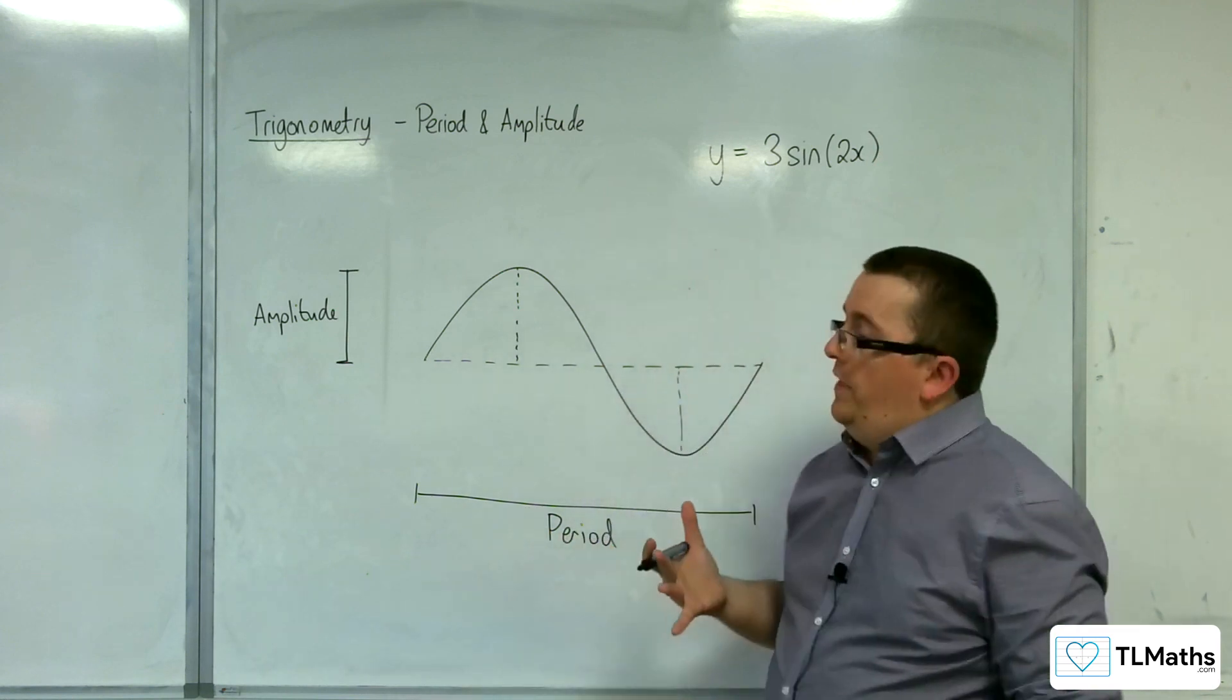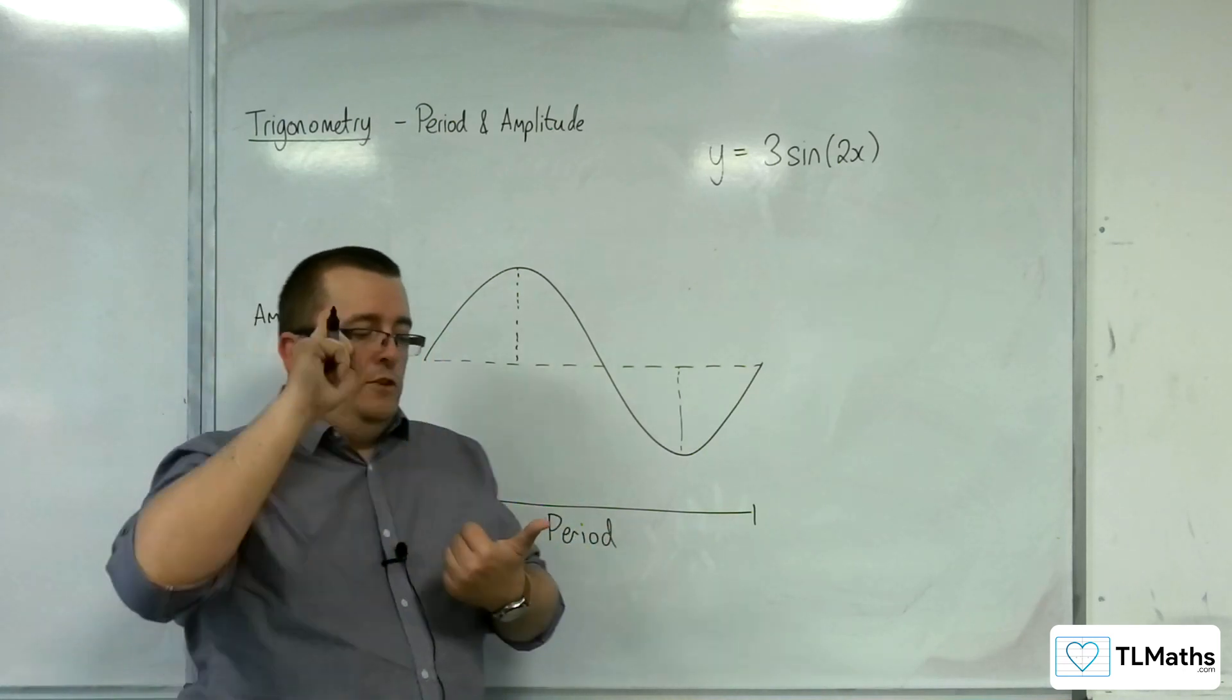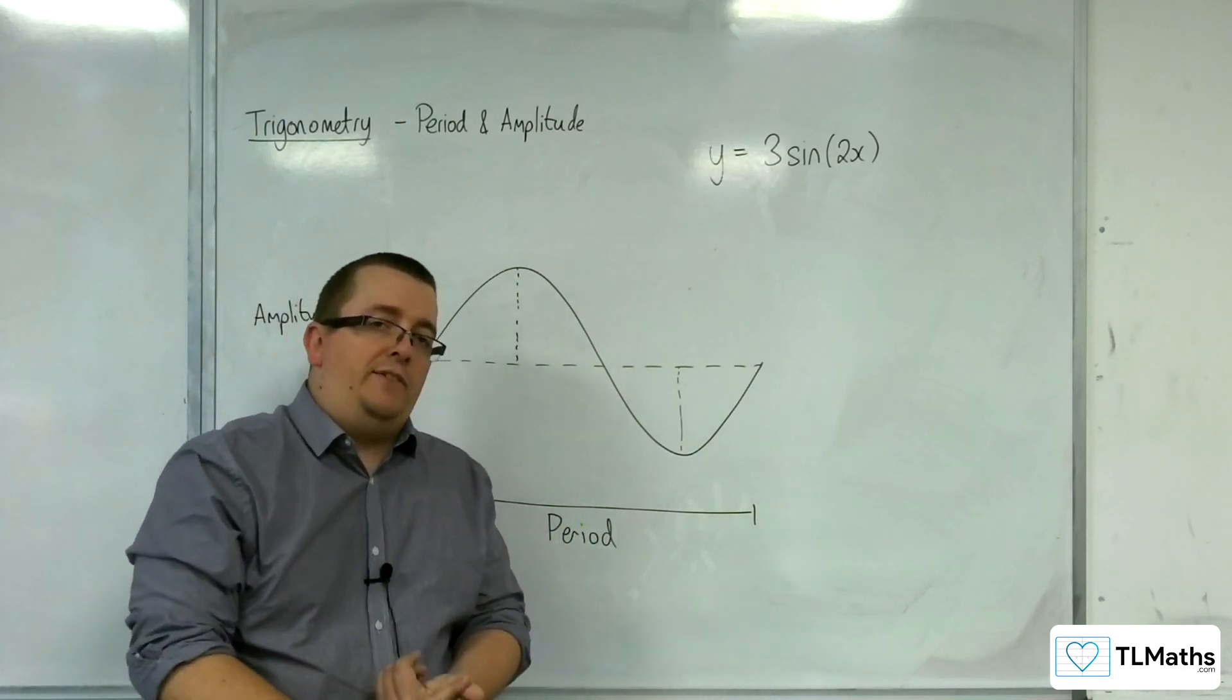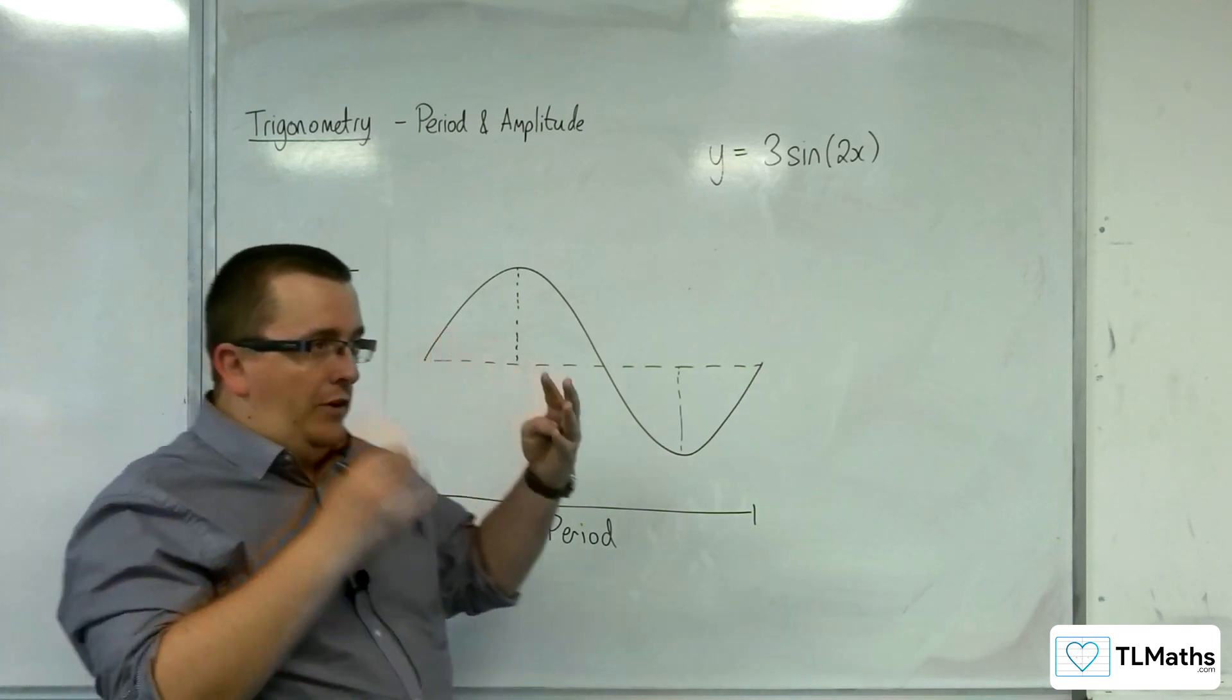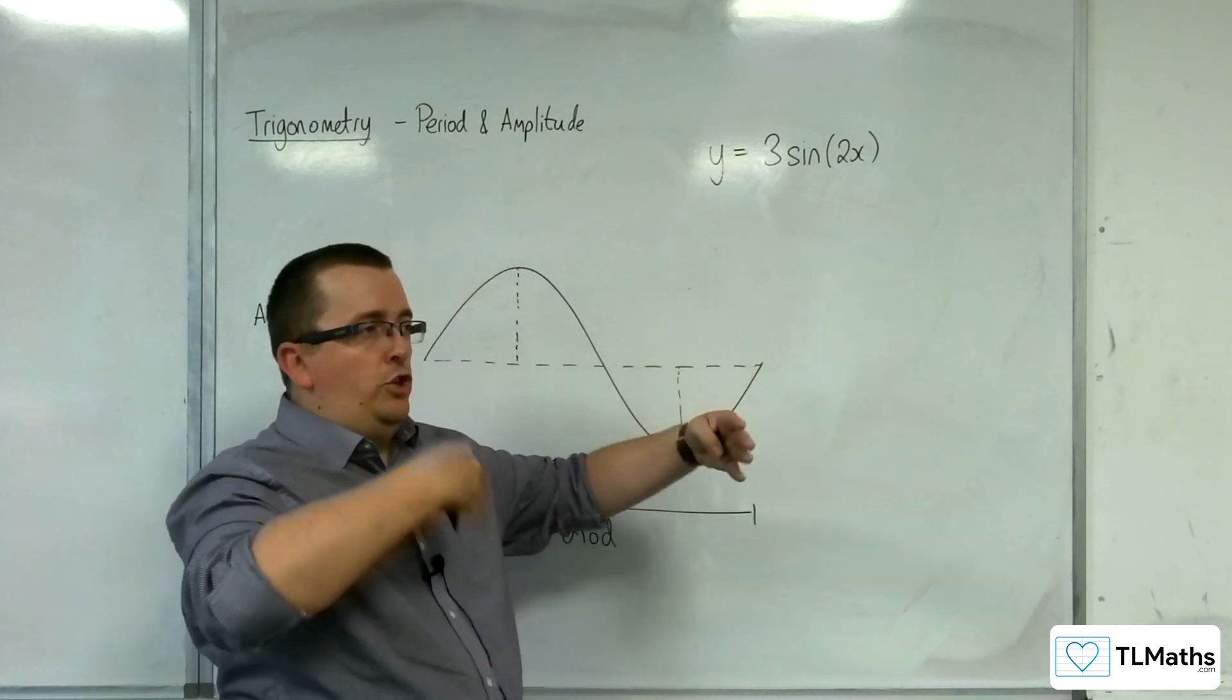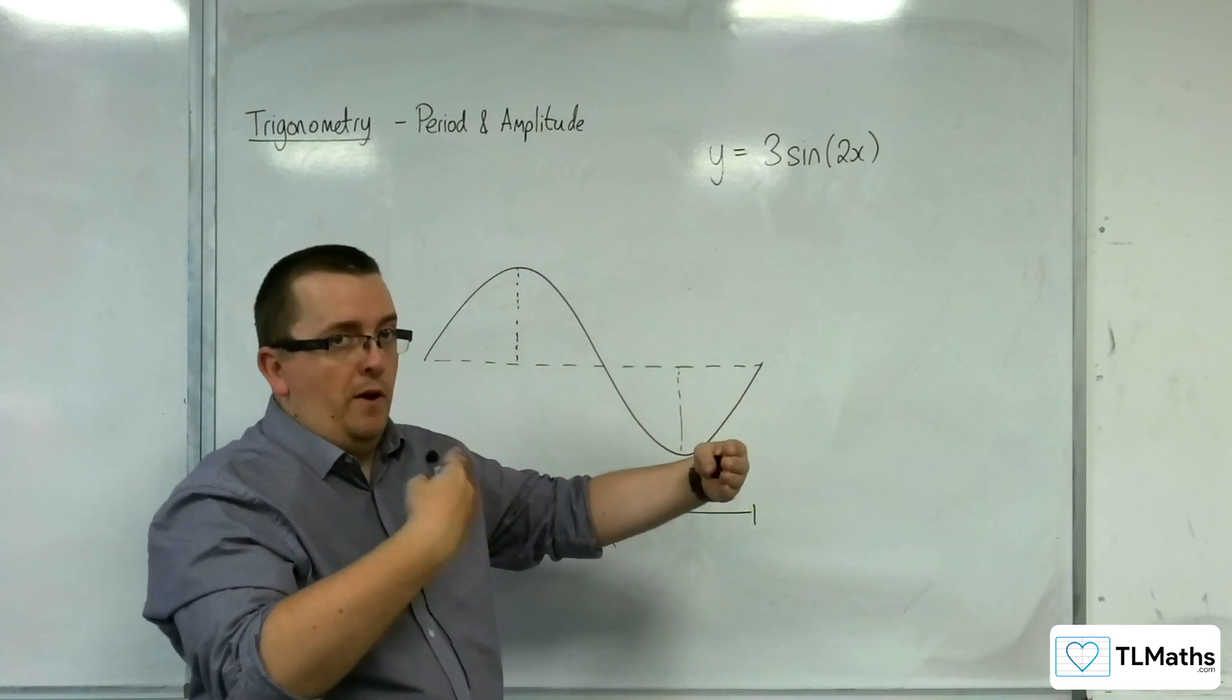Then I know that this is a curve that has been stretched parallel to the x-axis, factor 1 half. The sine curve traditionally has a period of 360 degrees, or in radians 2 pi.